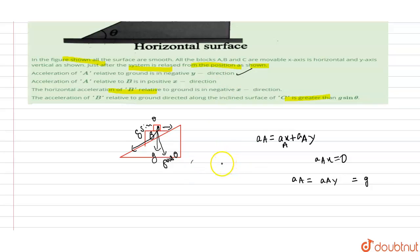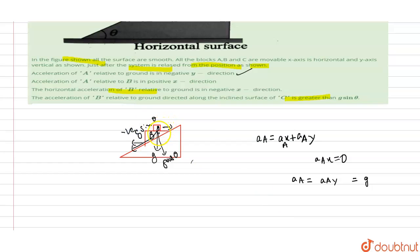Acceleration of A relative to B is in the positive x direction. In the second statement, acceleration of A relative to B is in the positive x direction. This statement is also correct because we know that B moves in the negative x direction. To counter it, the acceleration of A relative to B must be in the positive x direction. This is the acceleration of A relative to B.